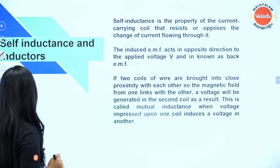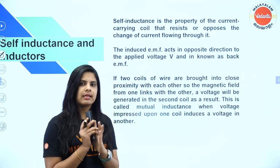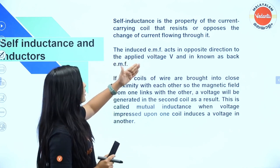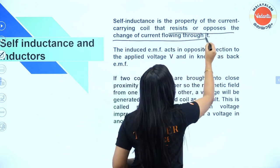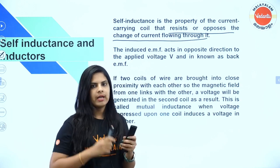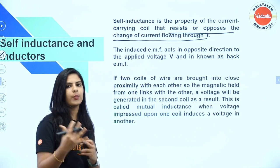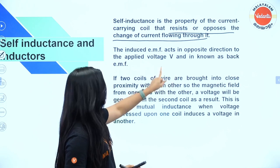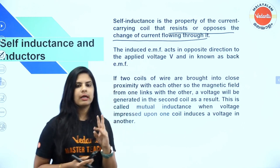Next, self-inductance and inductors. Self-inductance is the property of a current-carrying coil that resists or opposes the change in current flowing through it. The induced EMF acts in the opposite direction. Mutual inductance involves two coils where a current change in one induces EMF in the other.